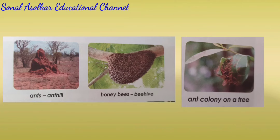Insects like bees and ants live in colonies. Colonies are groups of insects living together. Have you ever seen ant hills and beehives? These are the colonies of ants and honeybees. We can find different types of ants in and around our houses. Certain kinds of ants make their colonies on trees. Why do some insects hide? They hide to protect themselves from their enemies.